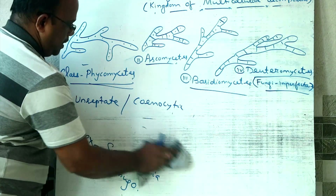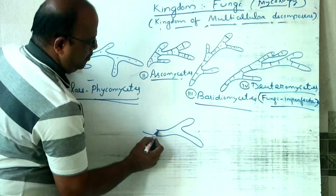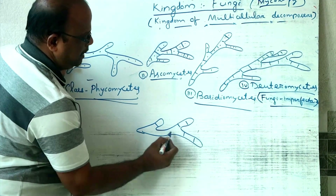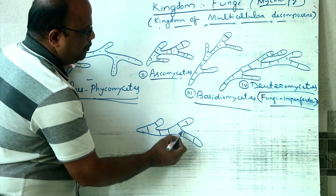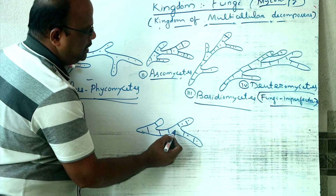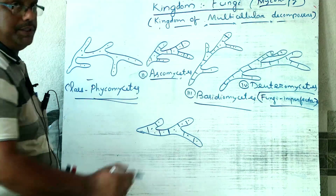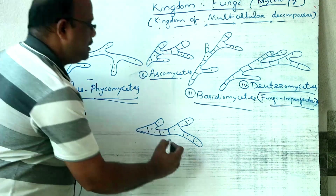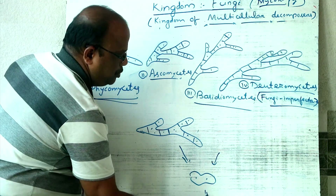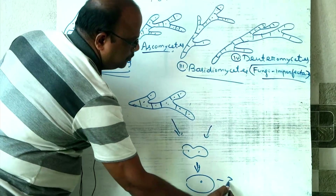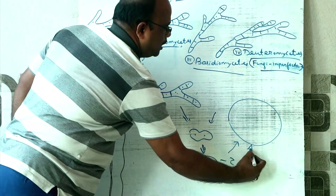The next class is Ascomycetes. Here mycelium is septate — meaning mycelium has partitions — making it a higher fungi. During sexual reproduction, gametes fuse to form a zygote, and the zygote in turn develops into a sac-like structure called an ascus.